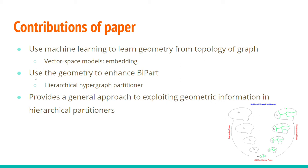Hierarchical hypergraph partitioning consists of three phases: coarsening, initial partitioning, and refinement or uncoarsening. We use this geometry information to improve the quality of this partitioner.